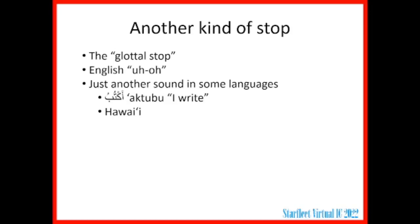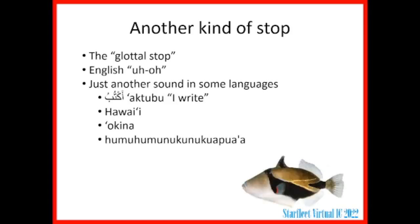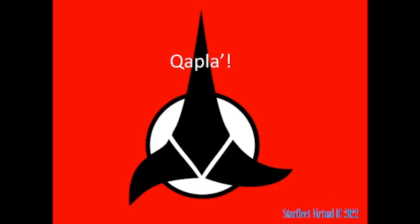The glottal stop is written as an apostrophe historically. In Hawaiian, the glottal stop is called the ʻokina, which itself begins with the glottal stop, and you get it in handy words like humuhumunukunukuāpuaʻa — that's a kind of fish in Hawaii. And if this looks familiar to you, it's because you see it on some of the classroom scenes in Star Trek: The Next Generation. The glottal stop in Klingon is also written with the apostrophe, like at the end of the word qapla'. It doesn't just end in an ah — it ends in an ah that abruptly cuts off with that glottal stop.